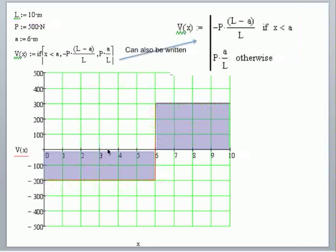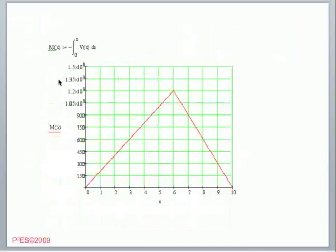Okay so let's go to the next window and we're going to find the value of the moment. The moment is simply the integral from 0 to X of the negative of the shear force, this V of X function. So straightforward I just write M of X colon equals the negative of the integral from 0 to X, V of X DX.